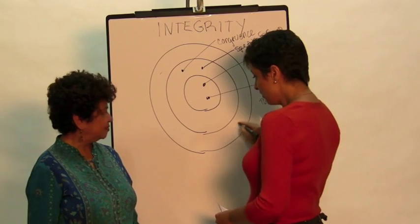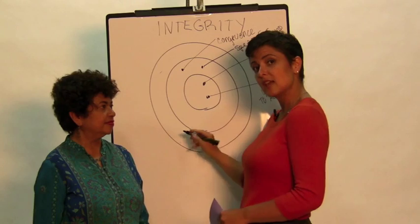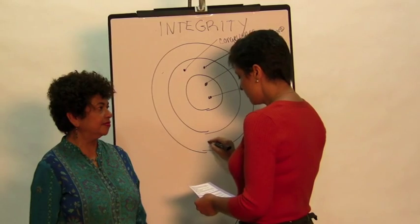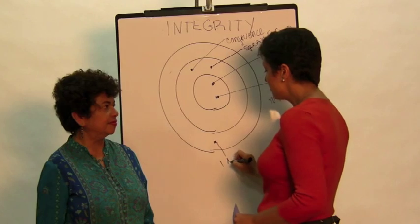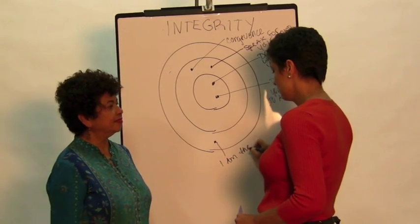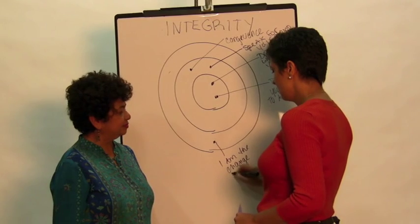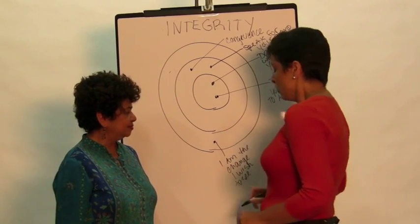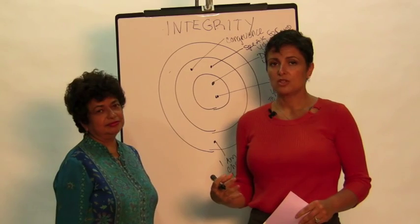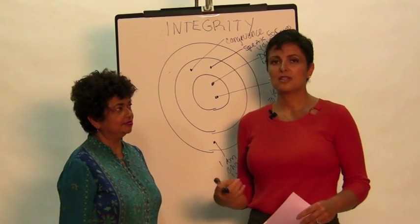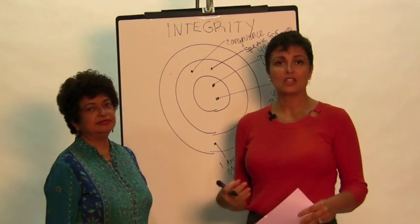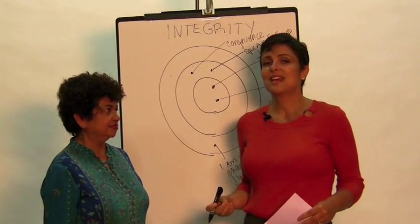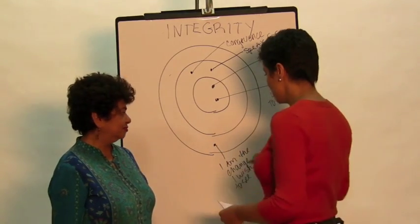Then in this final outer circle — the space of oneness and interdependence that Monica spoke about earlier — the two points of integrity are: "I am the change that I wish to see," which is a famous Gandhi quote. We really love that quote because it is about being the shift that you wish to see, being the change that you wish to see. So it's not "do as I say, not as I do" — it's "do as I say, as who I am." You are the shift you wish to see.